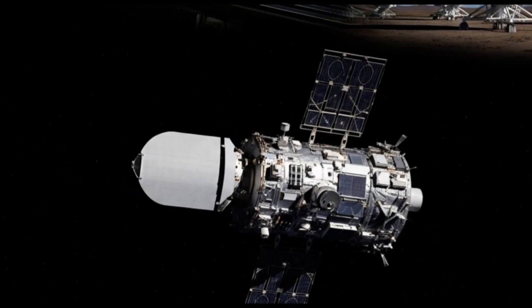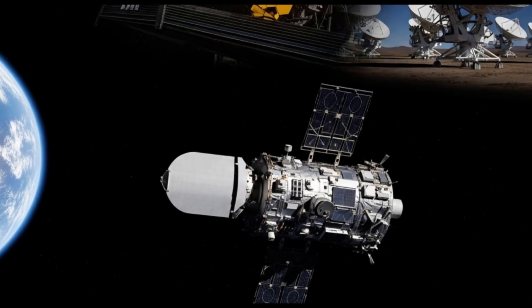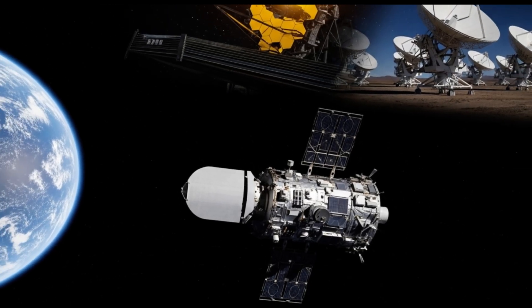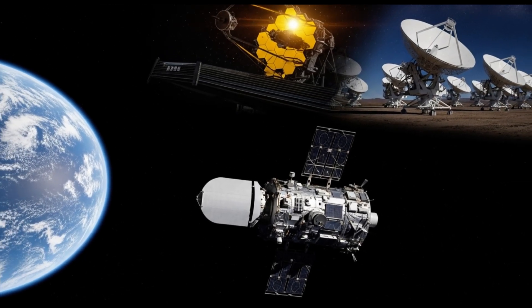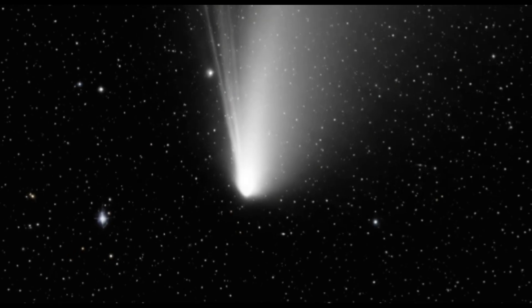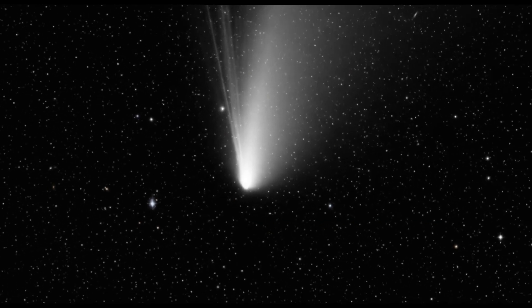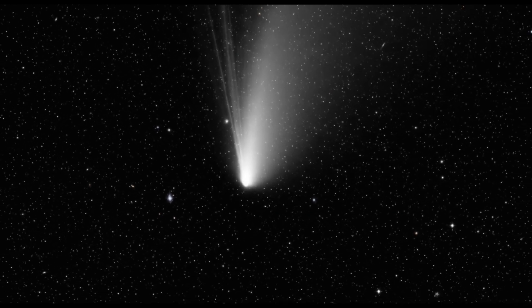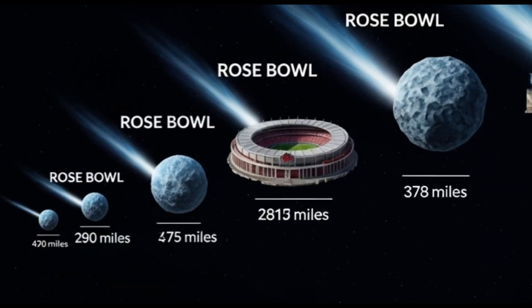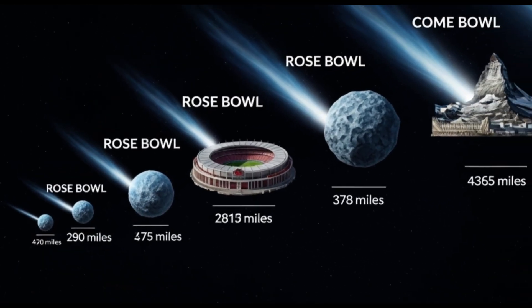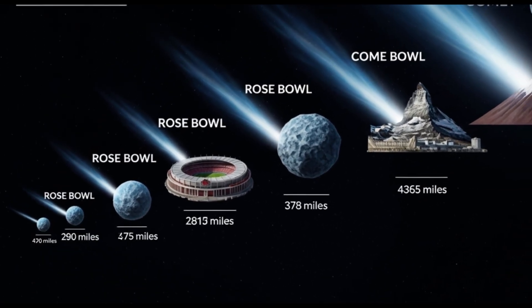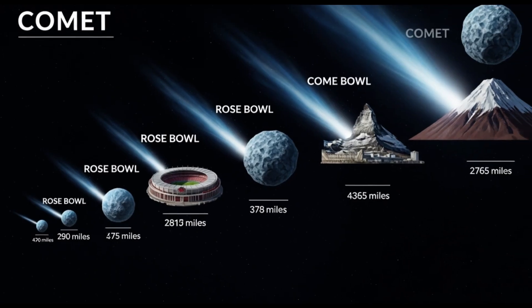But extraordinary claims require extraordinary evidence. And that's exactly what NASA and space agencies around the world are trying to find. The Hubble Telescope captured this stunning image showing a teardrop-shaped cocoon of dust around the icy nucleus. These observations helped estimate its size somewhere between 440 meters and 5.6 kilometers across.